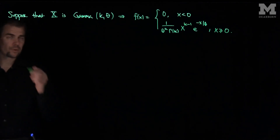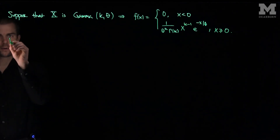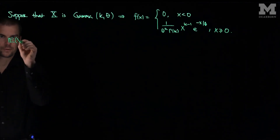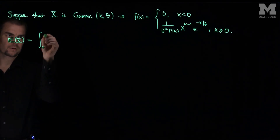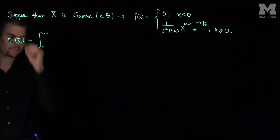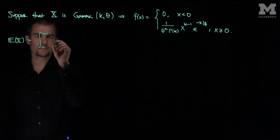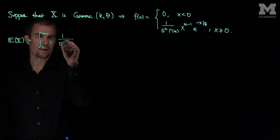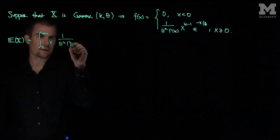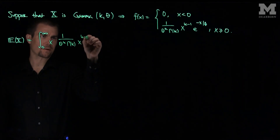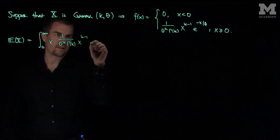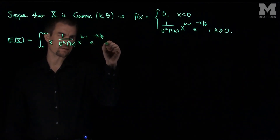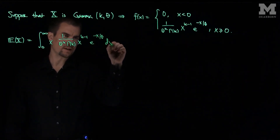To compute the expected value or the mean of this random variable, that will be the integral from zero to infinity of x times one over theta to the k, gamma(k), x to the k minus one, and then e to the negative x over theta dx.